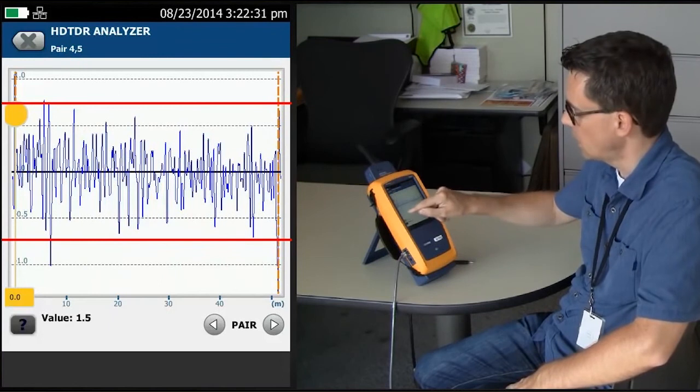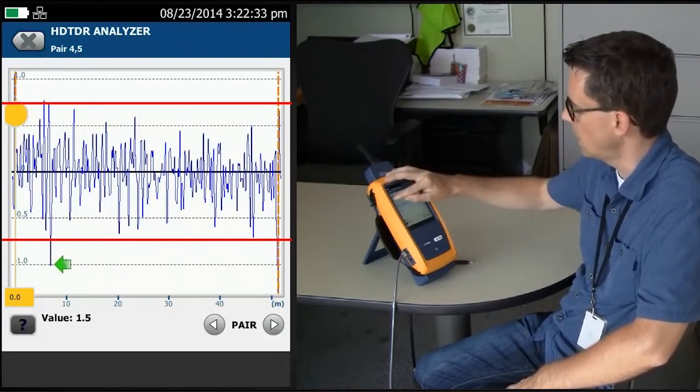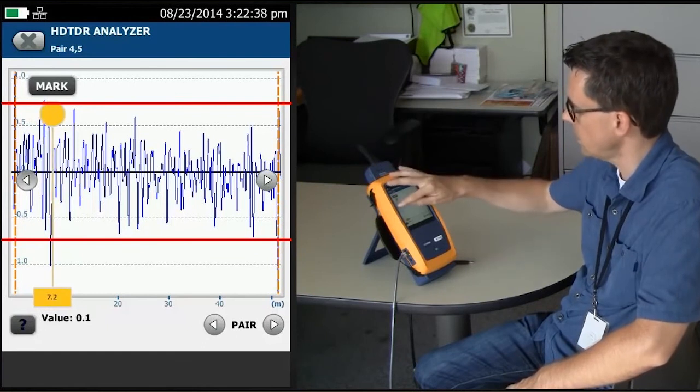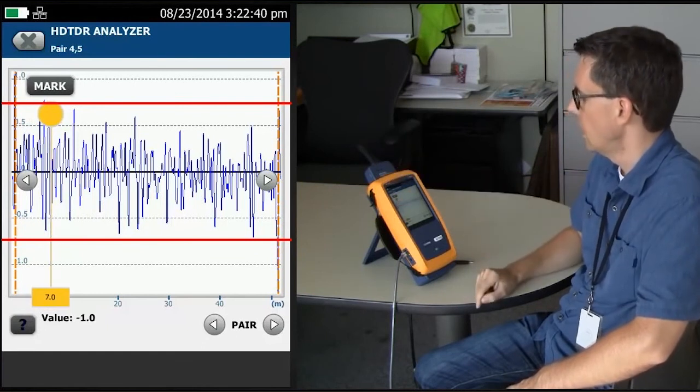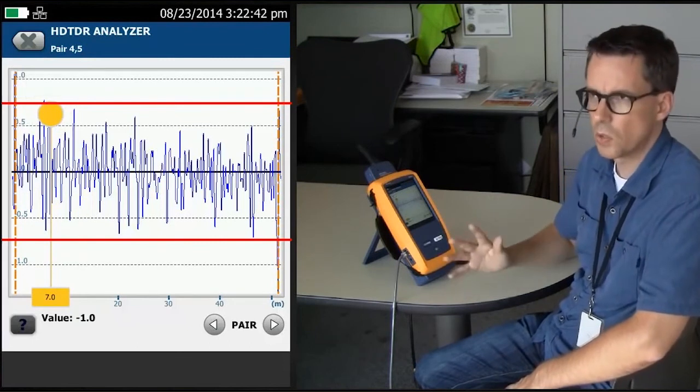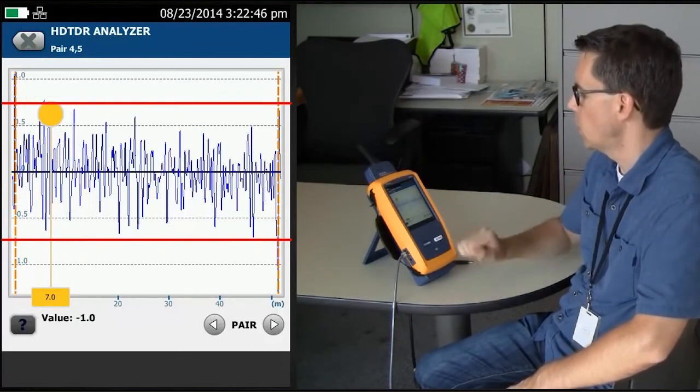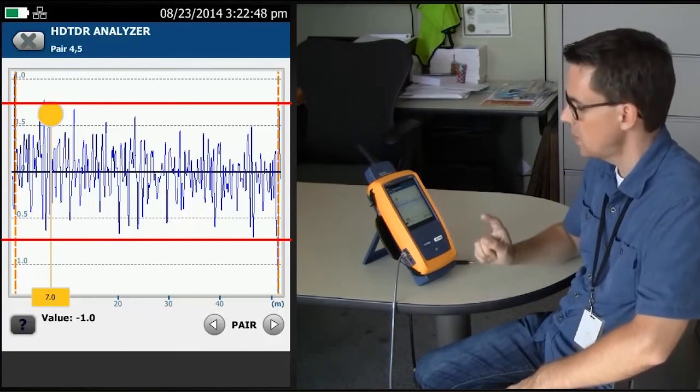Of course, somebody might spot this here, this little spike here, and indeed, I can move my cursor to that location. Let me fine tune that, and around about 7 meters, 23, 24 feet, it's found an anomaly that exceeds our 0.8. Now, this is very important.